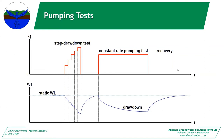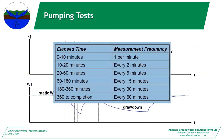Here is the recommended measurement frequency for pump tests: from 0–10 minutes, measure every minute (I personally do 30 seconds up to 5 minutes, then 1 minute up to 10). From 10–20 minutes, every 2 minutes. Every 5 minutes up to an hour. Every 15 minutes up to 3 hours. Every 30 minutes up to 6 hours. Then every hour from 6 hours onwards until finished.